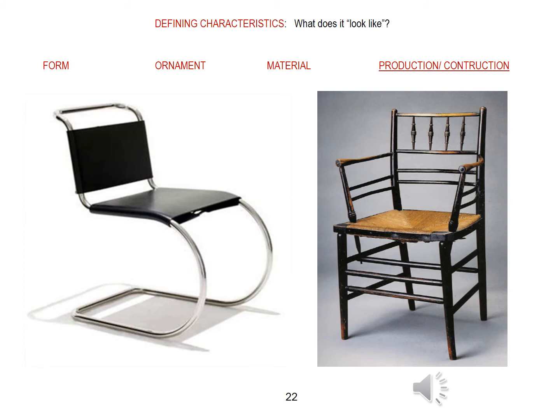Finally, production or construction techniques. The chair on the left is not only machine-made, it's also intended to express that fact. On the right, our farmhouse chair again, because it's also an iconic example of the meaning of things made by hand — a very important issue in the history of design. The tension between these two techniques looms large in our story, and we'll be talking a lot about what it all meant.